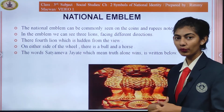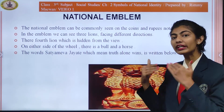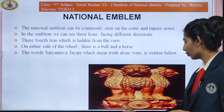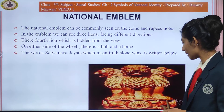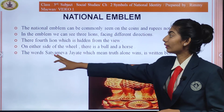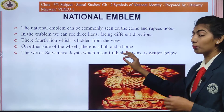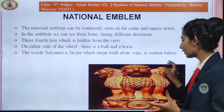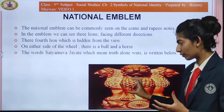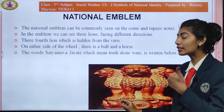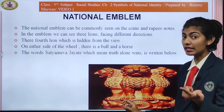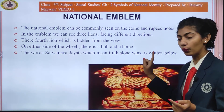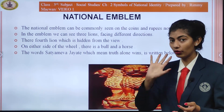You can only see three lions that are facing in different directions. On either side of the wheel, there is a bull and a horse. The word 'Satyameva Jayate' means 'truth alone wins,' and it is written below the emblem. Students, Satyameva Jayate is an important phrase — it means truth alone wins.